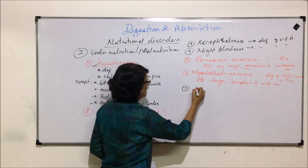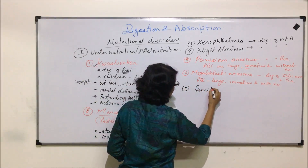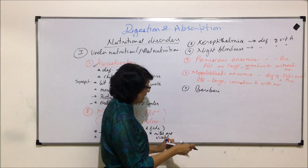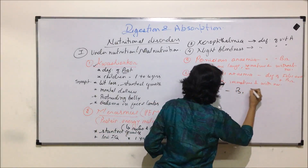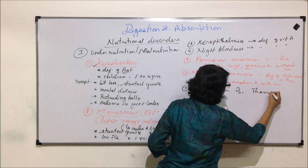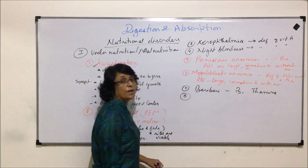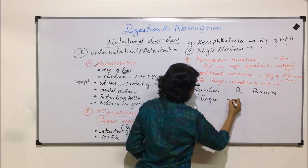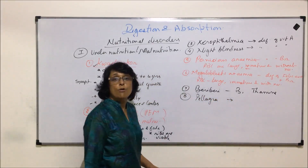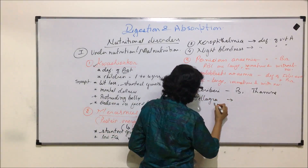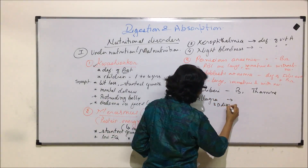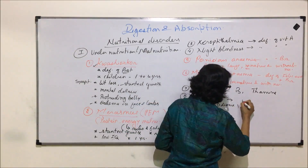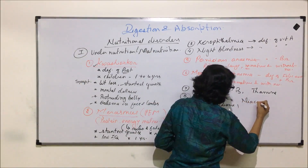Next, we discussed beriberi, which is due to vitamin B deficiency. Another disorder discussed earlier was pellagra, also known as the 3D disease, and that is due to deficiency of niacin.